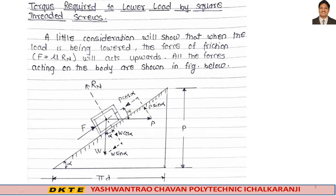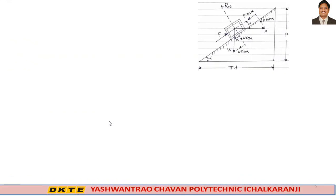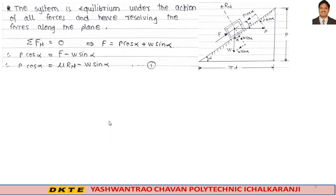Torque required to lower the load by square threaded screw: a little consideration will show that when the load is being lowered, the force of friction F equals mu·Rn will act upward. The system is in equilibrium under the action of all forces, as shown in the figure of a single thread development.